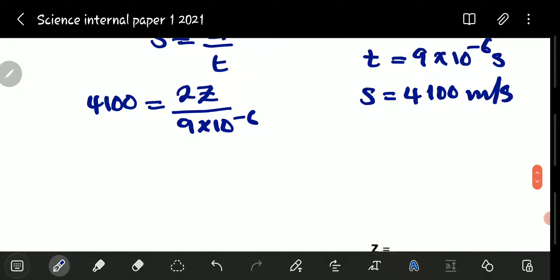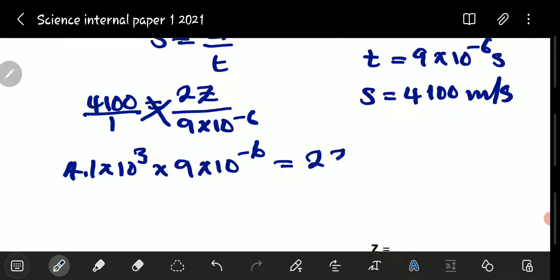So, we just now do the manipulation. 4,100 multiplied by 9 times 10 to the power negative 6. To make work easy for me, I'll convert the 4,100 into scientific notation, which is going to give me 4.1 times 10 to the power positive 3. Then, multiply by, since it's the cross multiplication, multiply by 9 times 10 to the power negative 6, is equal to 2Z.